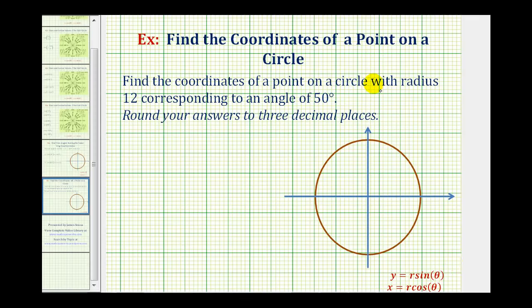We want to find the coordinates of a point on a circle with radius 12 corresponding to the angle of 50 degrees. To do this, let's make a reference triangle for our angle.